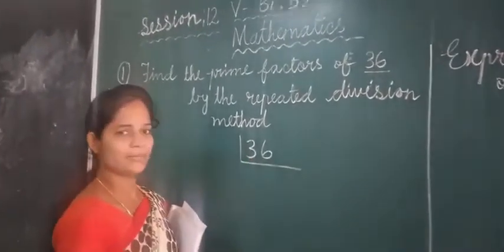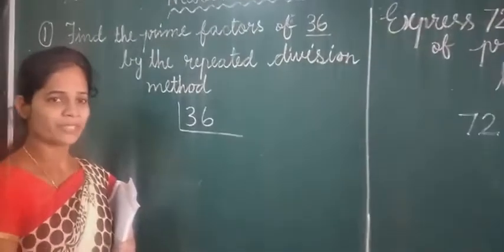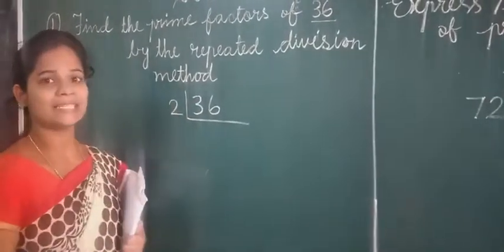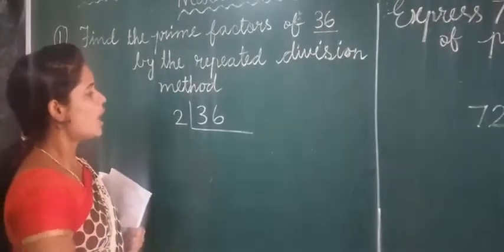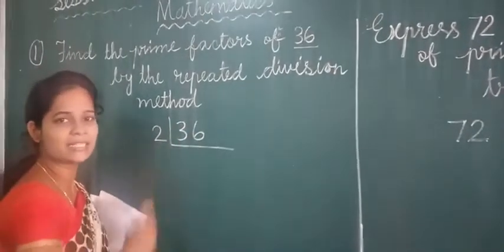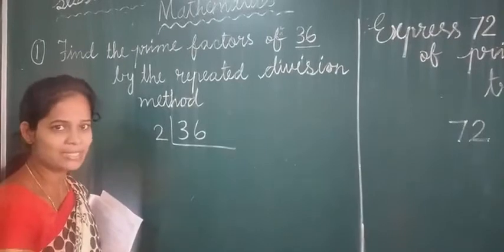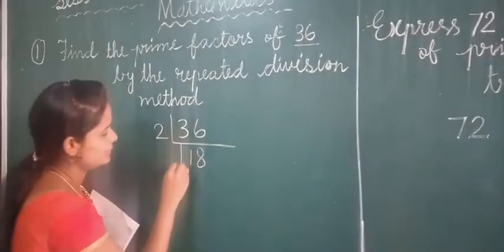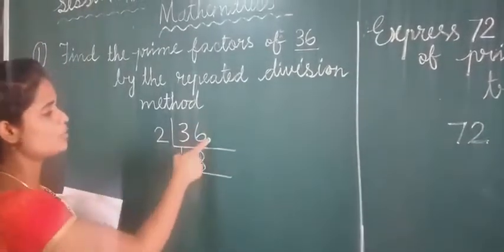36, with which table it will go? Yes, we will use the small table that is second table, number 2. How many 2's are there in 36? Yes, somebody is saying 18. Correct. Two 18's are how much? 36.